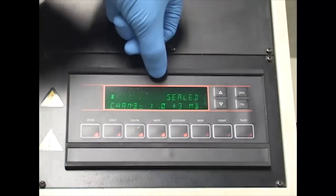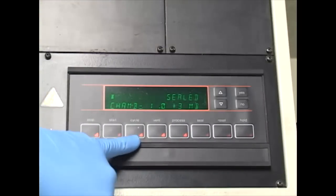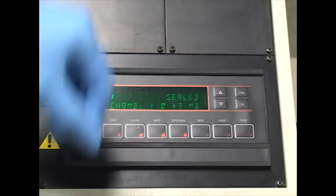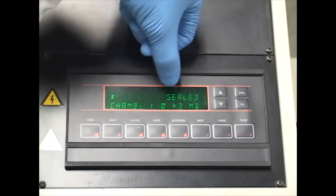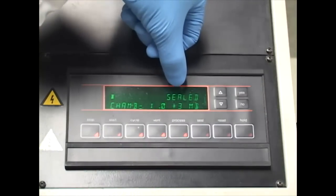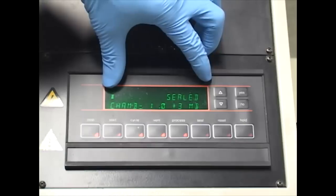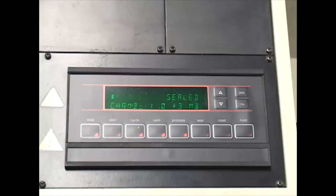Now when the instrument is ready, the word sealed will be displayed. You can see that the LED light on the cycle button is being lighted up. Quick notice: you see here we have the number 1.0 plus 3 mb. This means 1 times 10 to the power of plus 3 millibar. This is the atmospheric pressure of the room, which means that the sample is still in atmospheric pressure.